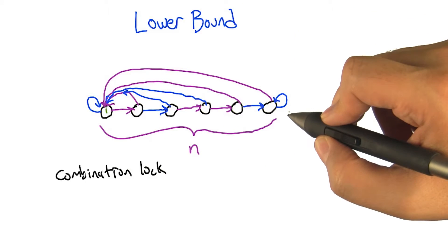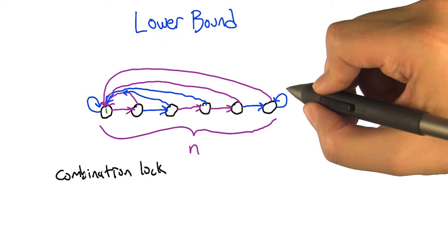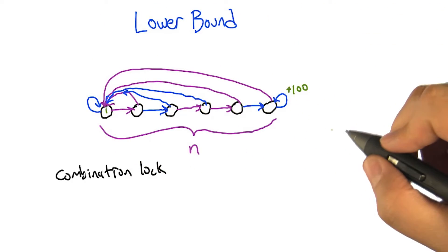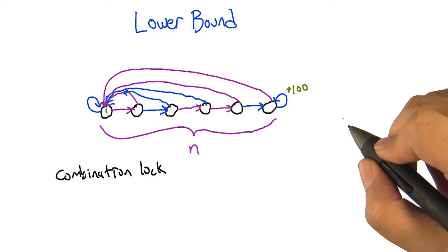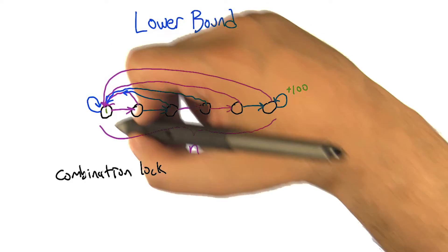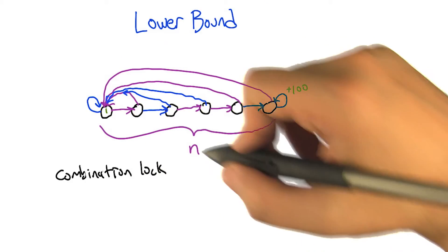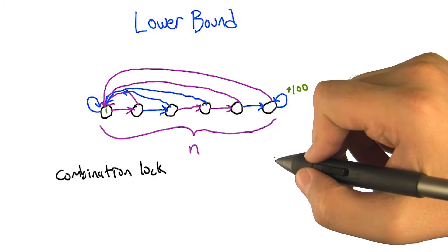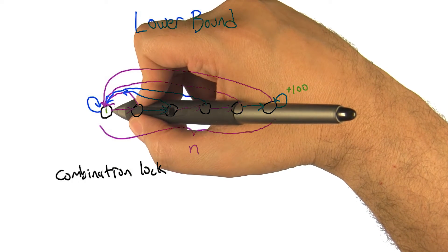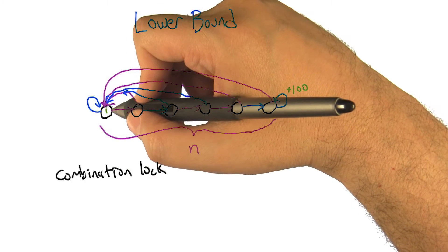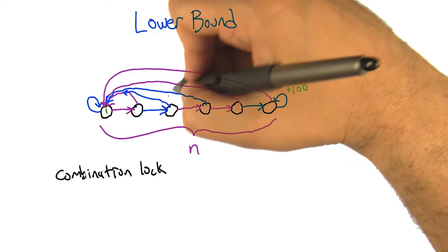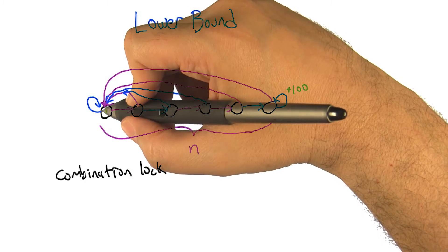We need to explore this whole thing because there's some kind of giant reward over here, and every step that we're not making along this chain is a mistake. The question is how many mistakes might we make en route to finding that reward. So we start off in state number one. What would RMAX do? It would pick one of the actions because they look the same — it doesn't know anything about the outgoing actions, so it just picks one.